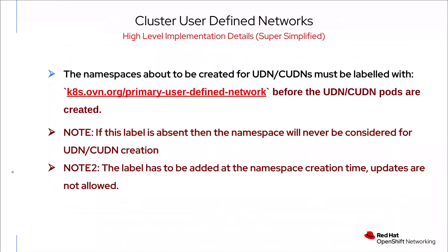To implement the CODN, we have to create namespaces from scratch. The namespaces created for CODN must be labeled with k8s.ovn.org/primary-user-defined-network before the CODN pods are created. Note that if this label is absent, then a namespace will never be considered for CODN creation. Also, the label has to be added at the namespace creation time, which means we cannot add this label on already created namespaces.